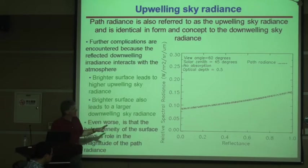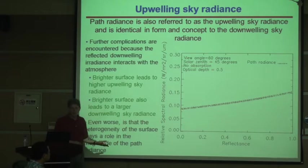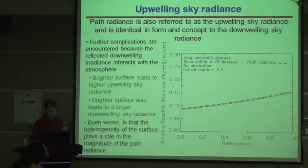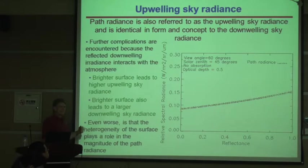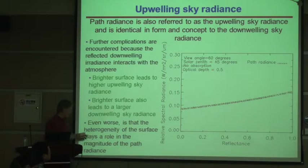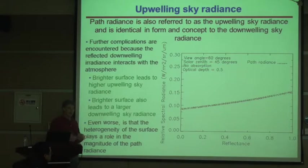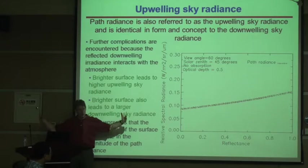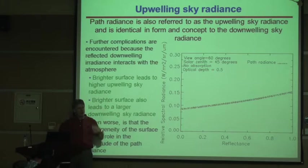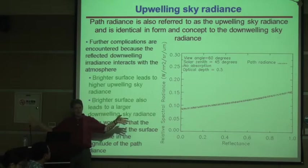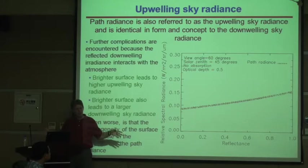It's a fairly complicated approach, which is why radiative transfer codes are complex. The thicker the atmosphere, the brighter the surface, the more surface heterogeneity plays a role, and you start to see effects like the adjacency effect — what happens nearby that impacts your sensor reading even though you don't see it directly in your image.